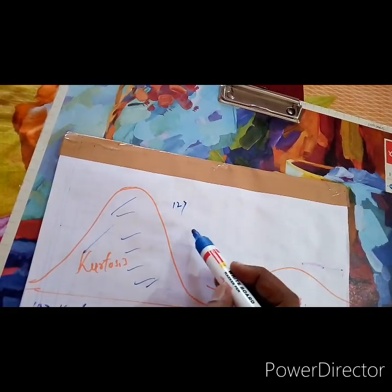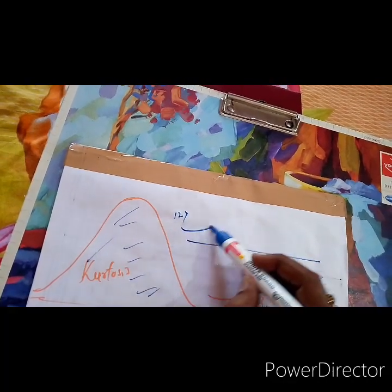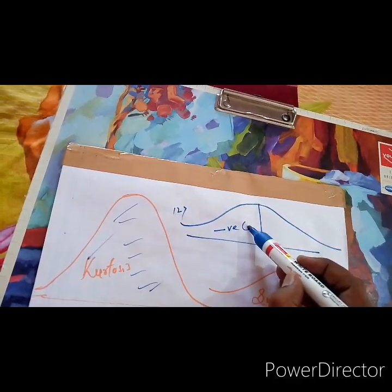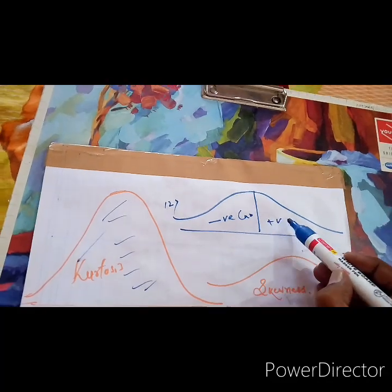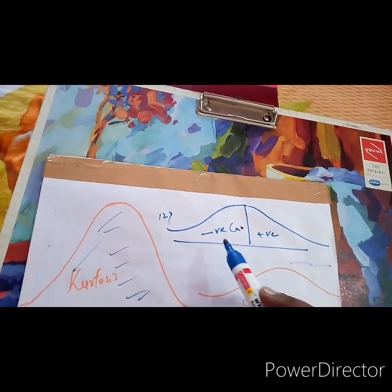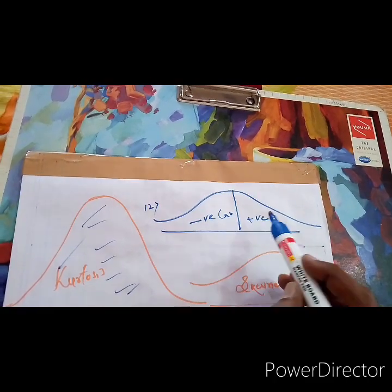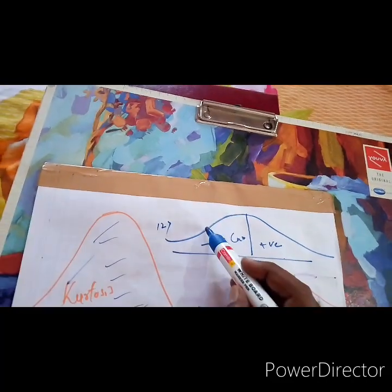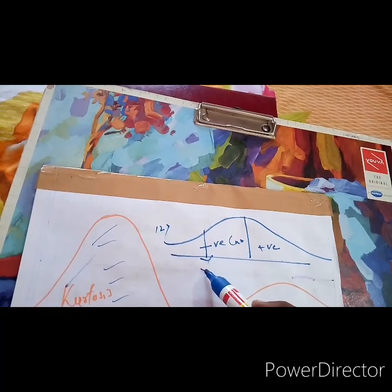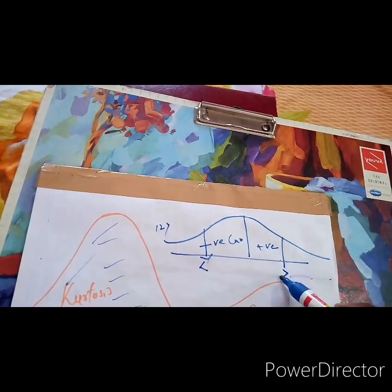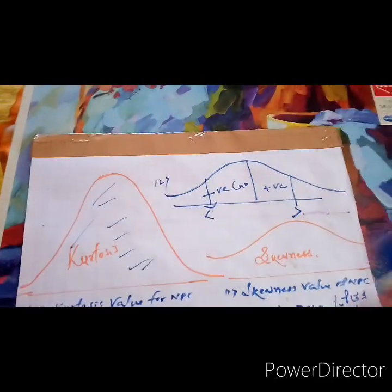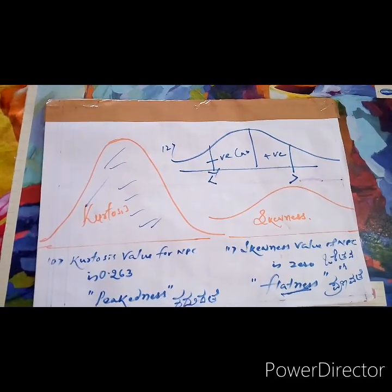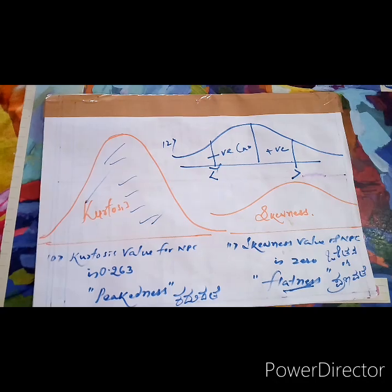And at the same time, the 12th is, NPC has two curves here. From this one, this is negative curve and this is positive curve. It has two curves, one is positive curve and negative curve. So by this, we can end the chapter like normal probability curve. These are the some properties of the normal probability curve. Thank you.